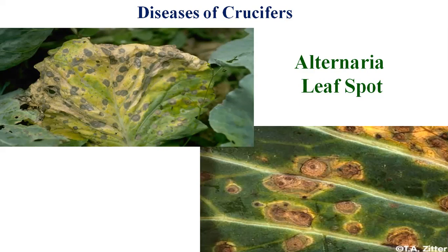Alternaria basically develops conidia in an alternate manner, releasing them in abundance — that's why it is known as Alternaria. It forms a lot of conidia to cause heavy infection.